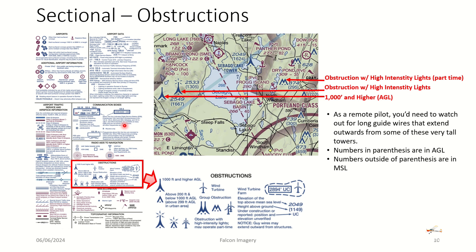Another key section covers obstructions — mainly towers and wind turbines. The depiction of the obstruction delineates how tall it is, whether it has lighting capability, and if there are clusters of antennas nearby or wind turbines.